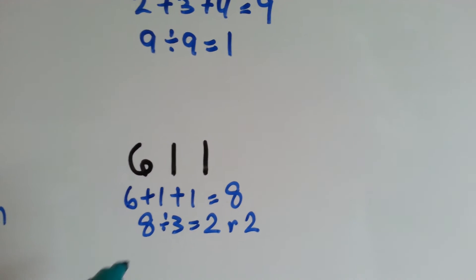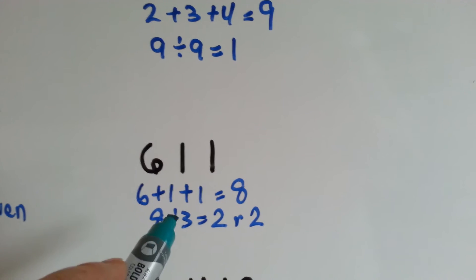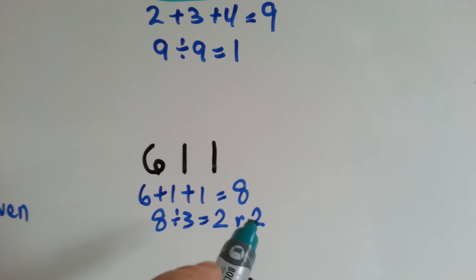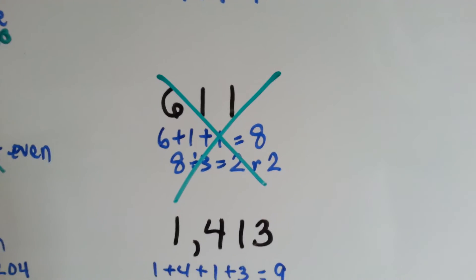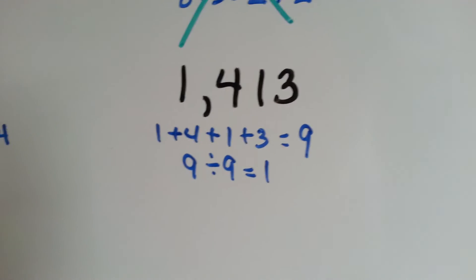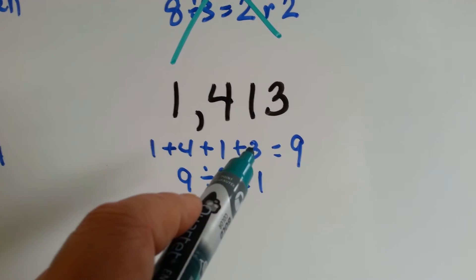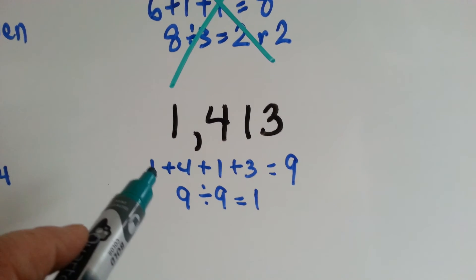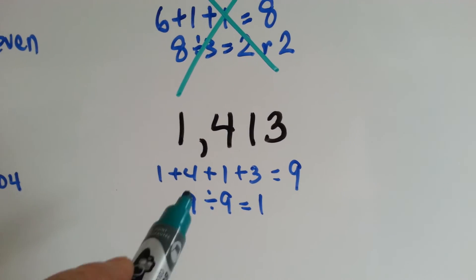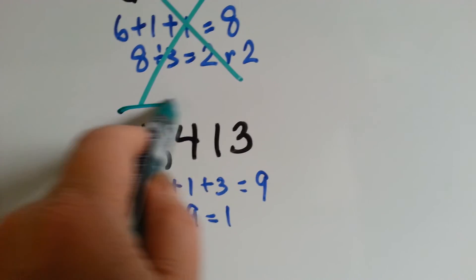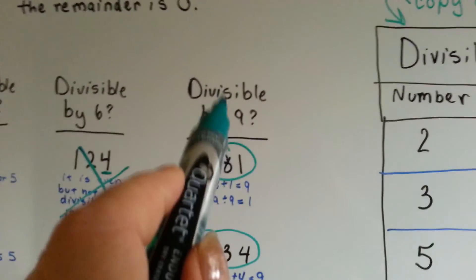How about 611? We add 6 plus 1 plus 1 and we get 8. 8 divided by 9 has a remainder, so nope — no remainders allowed. That one is not divisible by 9. How about 1,413? We've got 1 plus 4 plus 1 plus 3, adding them straight across: 1 plus 4 is 5, plus 1 more is 6, 7, 8, 9. And 9 divided by 9 is 1. So yes, 1,413 is divisible by 9.